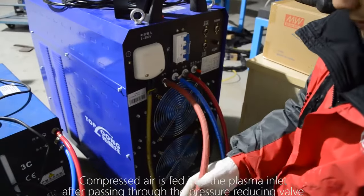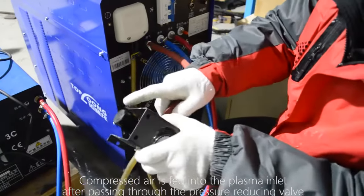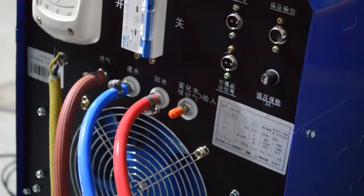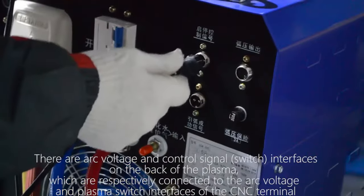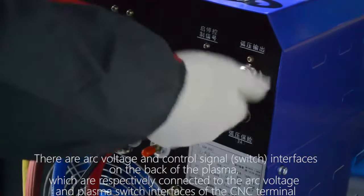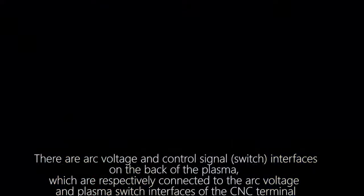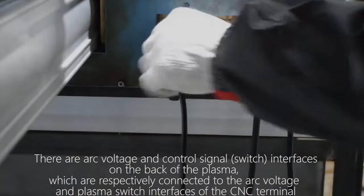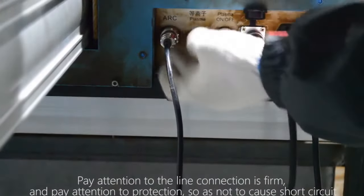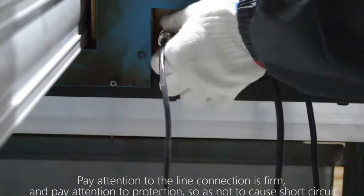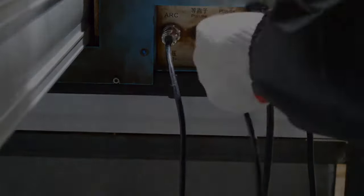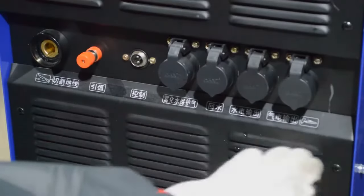Compressed air is fed into the plasma inlet after passing through the pressure reducing valve. There are arc voltage and control signal interfaces on the back of the plasma which are respectively connected to the arc voltage and plasma switch interfaces of the CNC terminal. Pay attention to the line connection is firm and pay attention to protection so as not to cause short circuit.